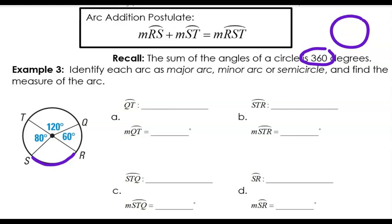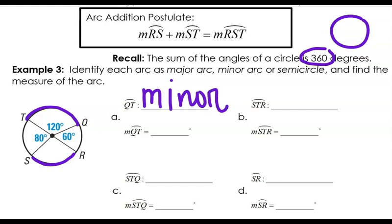Now we have to name each arc: is it major, minor, or a semicircle? So we look at the picture or the numbers we get for our answer. QT — that means from here to here — the measure is 120 degrees. That's less than halfway around the circle, so that is a minor arc. The measure of the central angle is 120 degrees, so the measure of the arc is exactly the same — also just equal to 120 degrees.